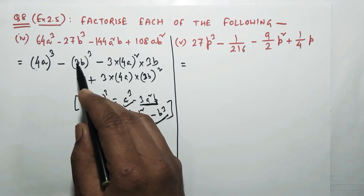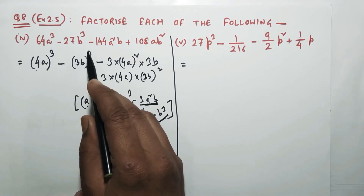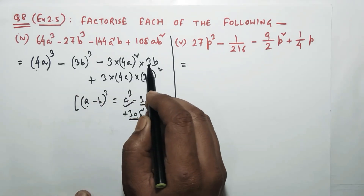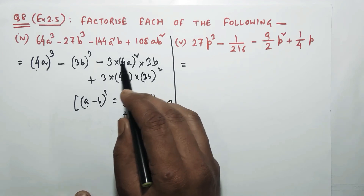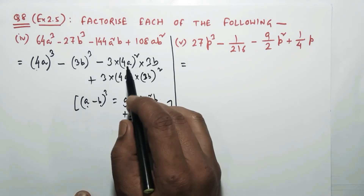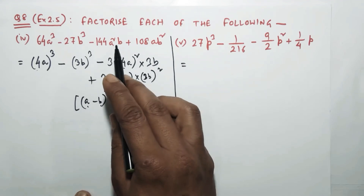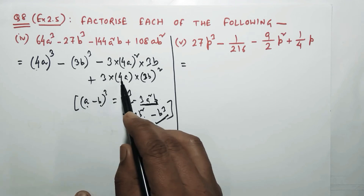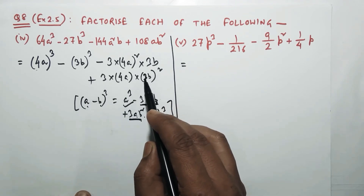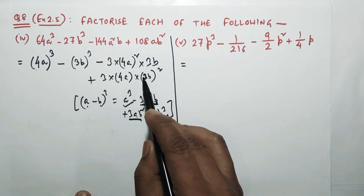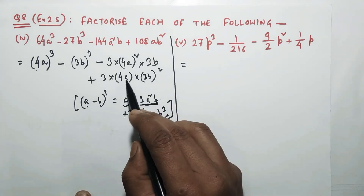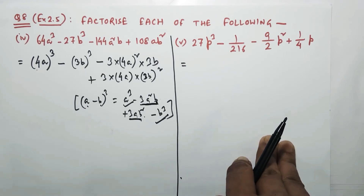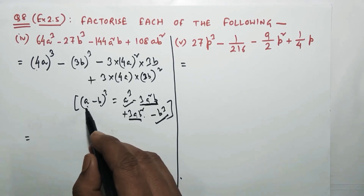Checking: 4³ = 64a³ ✓. 3³ = 27, so 27b³ ✓. For the middle term: 3×3 = 9, 4² = 16, so 16×9 = 144a²b — matching. Then 3×4 = 12, 3² = 9, 12×9 = 108ab² — matching. Since all terms are matching, it is directly in the formula (a - b)³.